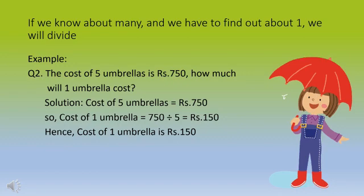Example 2: The cost of 5 umbrellas is Rs. 750. How much will 1 umbrella cost? Solution: Cost of 5 umbrellas equals Rs. 750, so cost of 1 umbrella equals 750 divided by 5, which equals Rs. 150. Hence, the cost of 1 umbrella is Rs. 150.